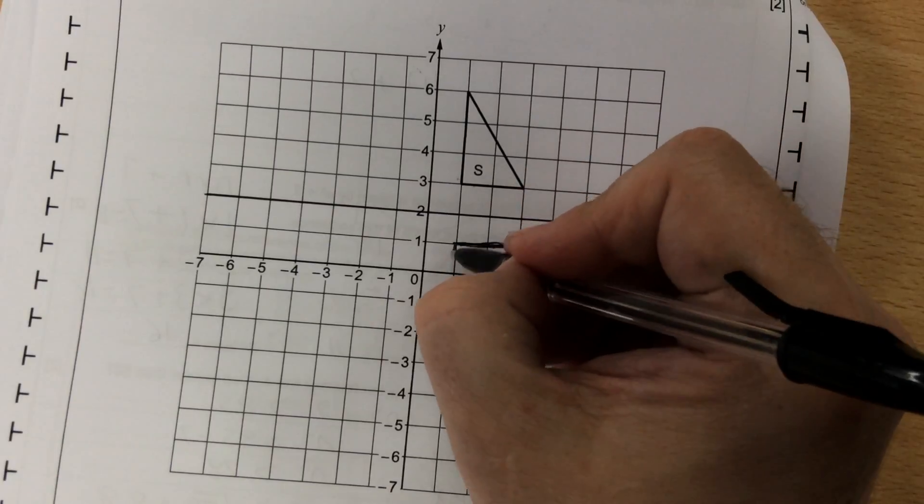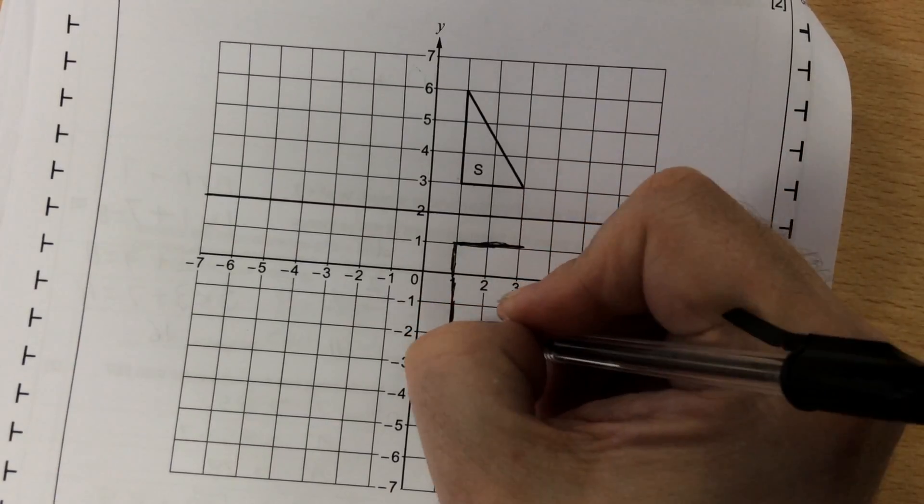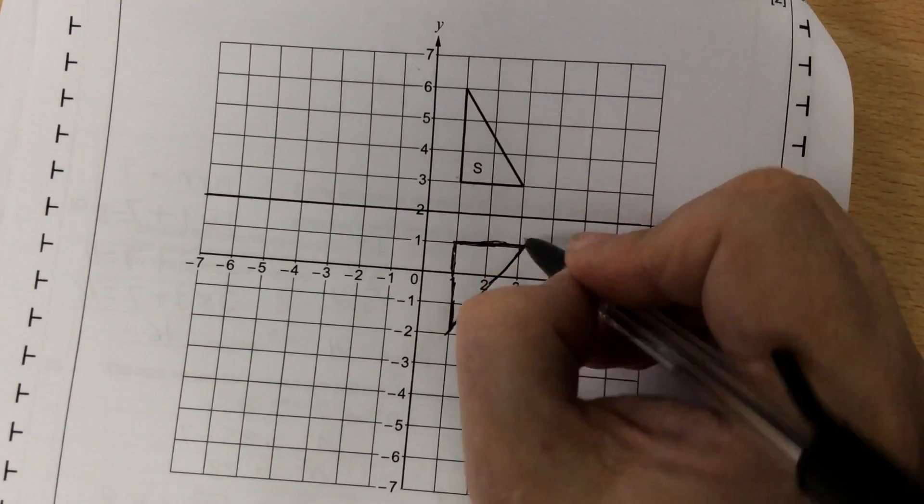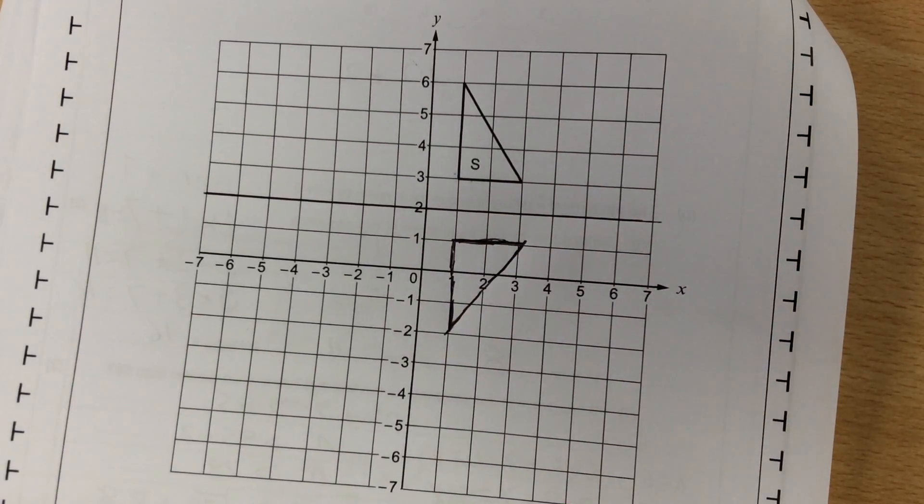It then goes up 3, so I'm now going down 3. And then I join them up to make the triangle, and that's the reflection in that line.